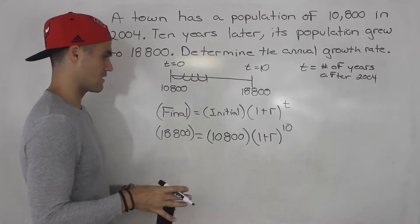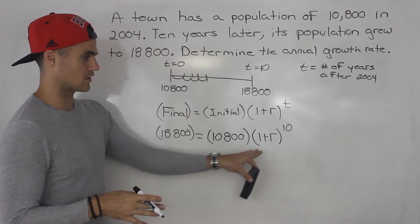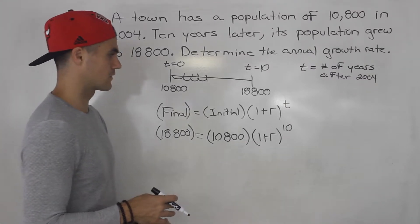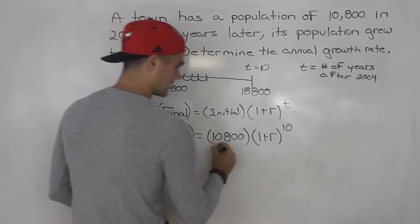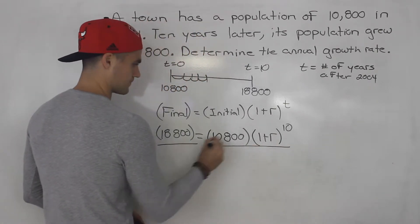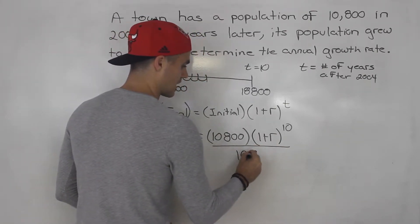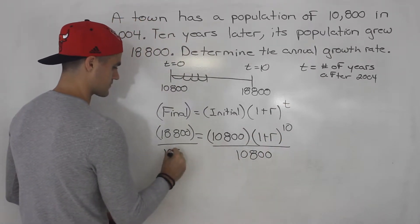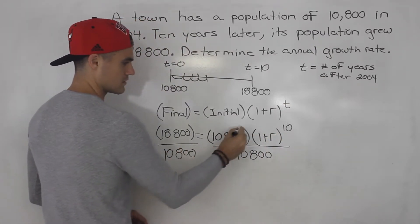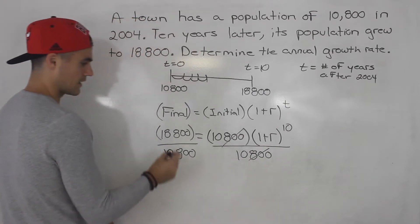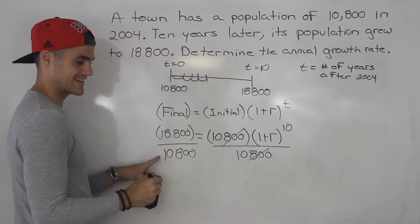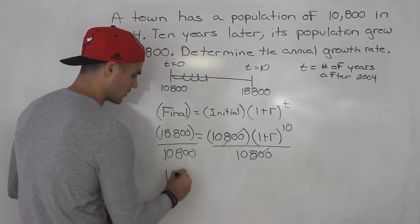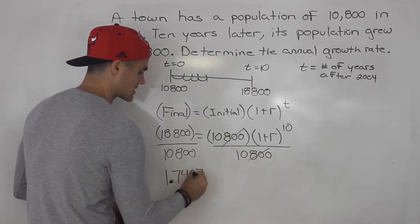So now notice that we have an equation here with one unknown, this r here that we could solve for. The way we could do that is get rid of this initial value in front, so we have to divide it because it's attached to it. So these will cancel out here. 18,800 divided by 10,800, if you do that in your calculator, that will be approximately 1.74074.